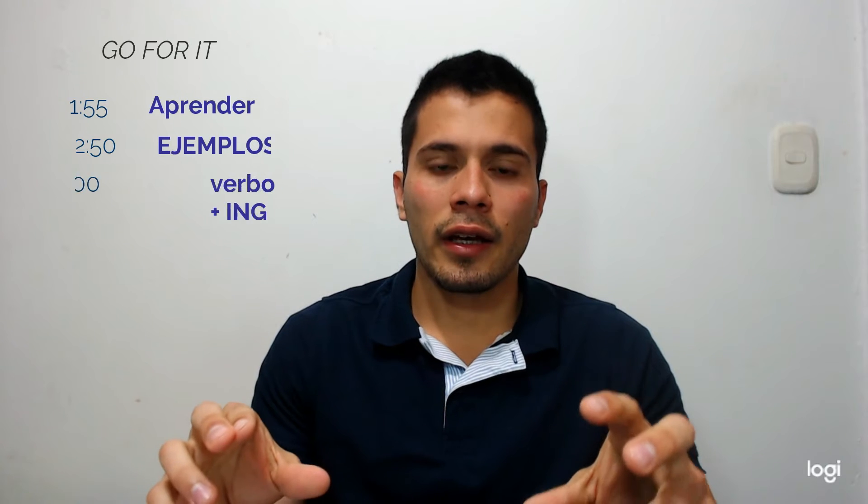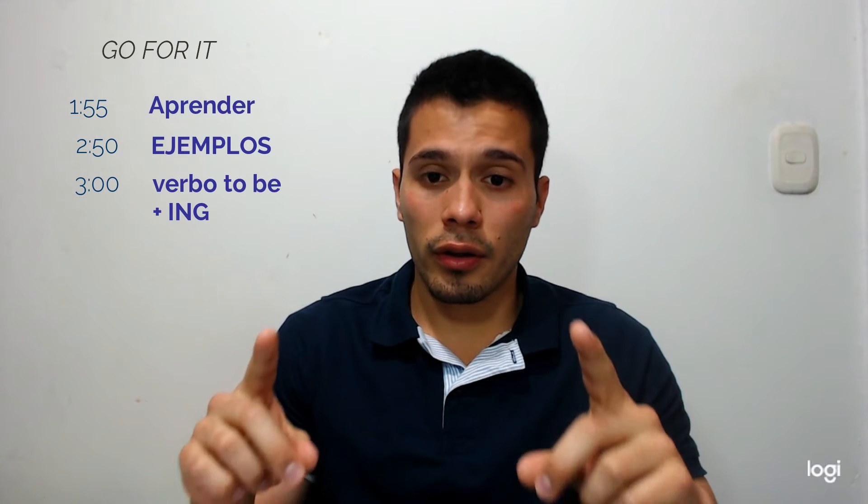So welcome! Now we are looking at the verb 'to be.' We already saw the negative form and how to ask questions. And right now we're going to see how we can add -ING, using the verb 'to be,' to describe actions. So then, we're starting right now.